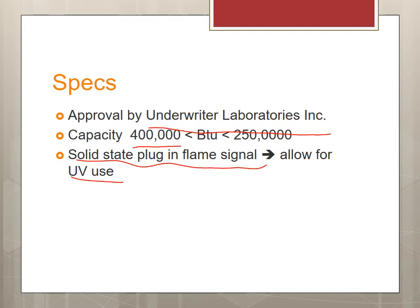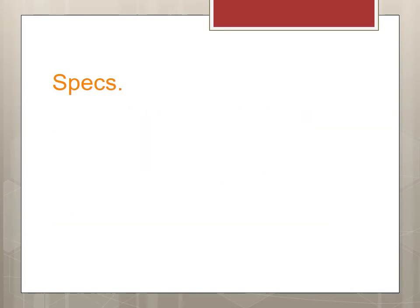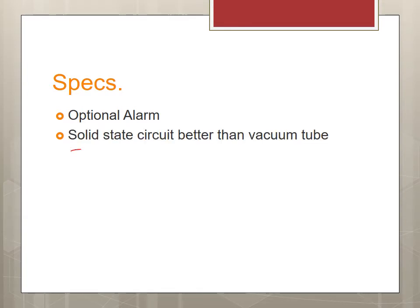There is a pre-purge after each cycle and when the flame goes out. Whenever we do a start, there's always a pre-purge, and if we have a flame failure, we do the pre-purge again before restarting. It has a manual reset — if something goes wrong we press it, but we always have to check the reason for the failure. There's also an optional alarm that can connect all the way to the control room, either sound or light.